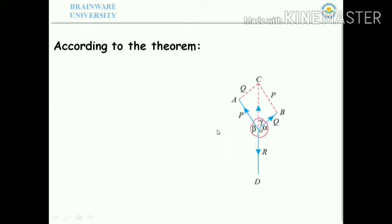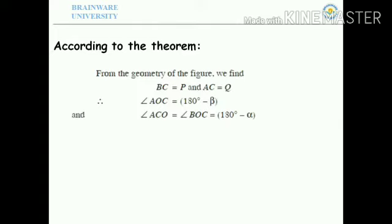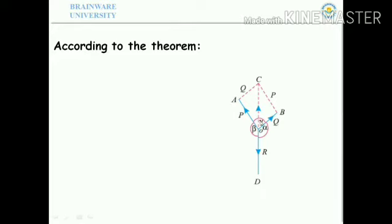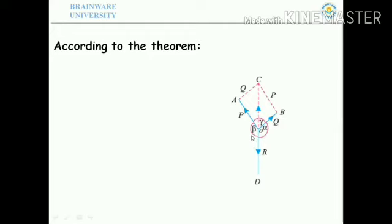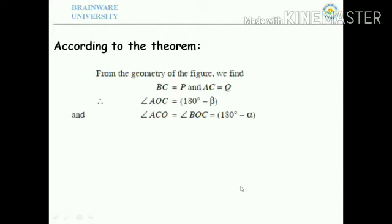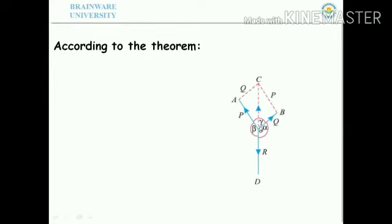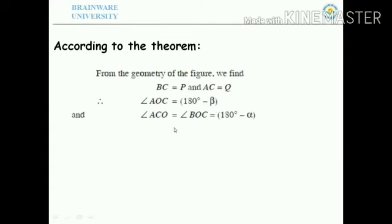In the figure, angle AOC corresponds to the construction where OA = P and OB = Q. Angle AOC equals 180 minus beta, and angle BOC equals 180 minus alpha. From the figure, angle BOC is equal to 180 minus alpha and AOC equals 180 minus beta.